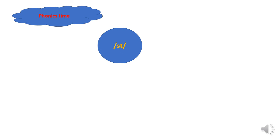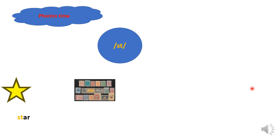Now we will learn about a new sound which comes from two letters: S and T. S and T make the sound 'st'. We have a lot of pictures which indicate this sound. The first one is a star — it starts with the sound 'st'. This is the word 'star'. The next one is stamp — stamp is something we can stick, like stickers. It also starts with 'st'.